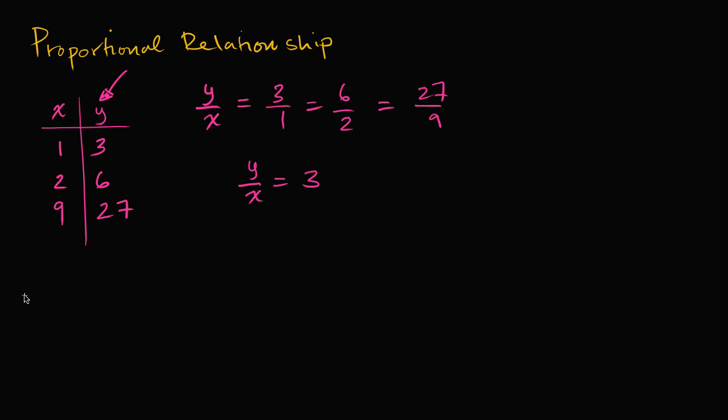So let's say we have a and b. Now let's say when a is one, b is three. And when a is two, b is six. And when a is 10, b is 35.